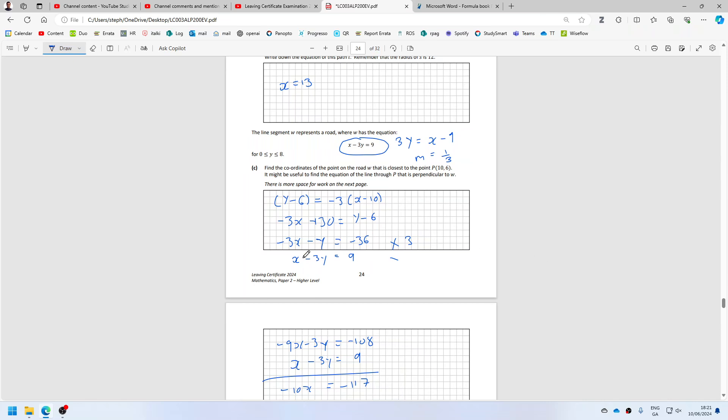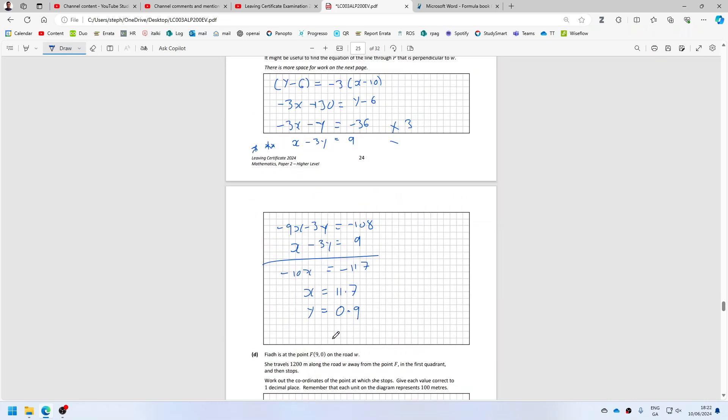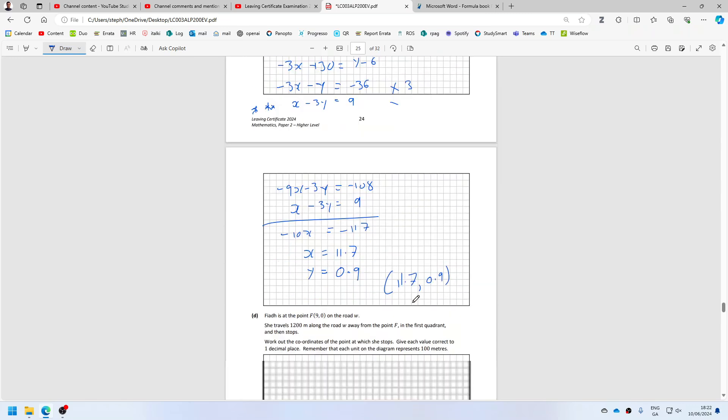So my equation x minus 3y equals 9, that's correct. So let me just double check my other equation. y minus 6 equals minus 3 times x minus 10, minus 3x plus 30 equals y minus 6, minus 3x minus y equals minus 36. I think I'm right, that was a decimal, I think I'm right, I hope I am. Part C.